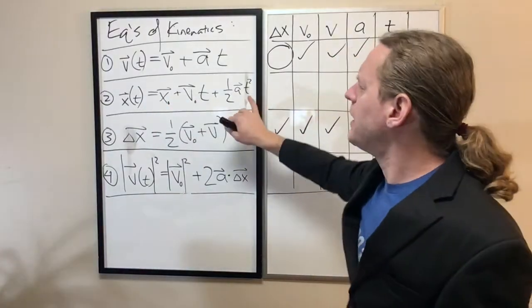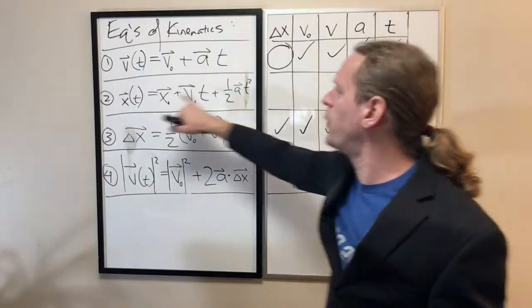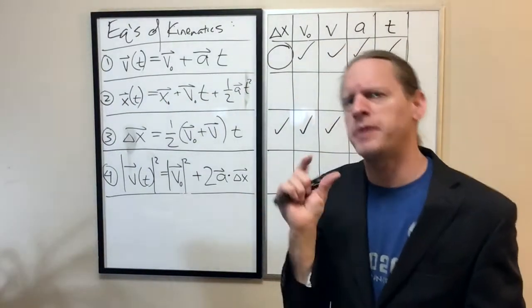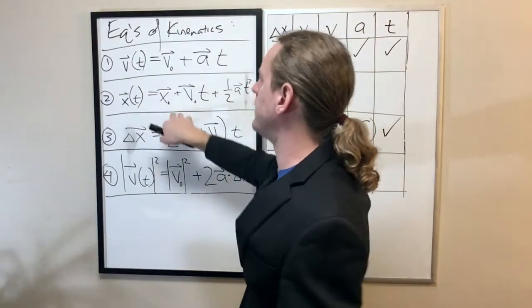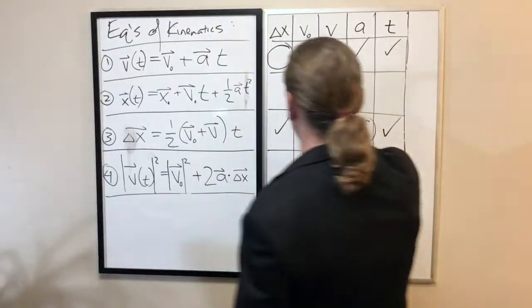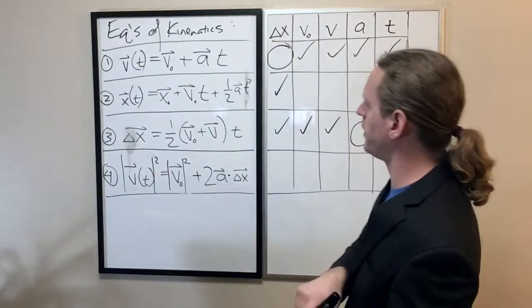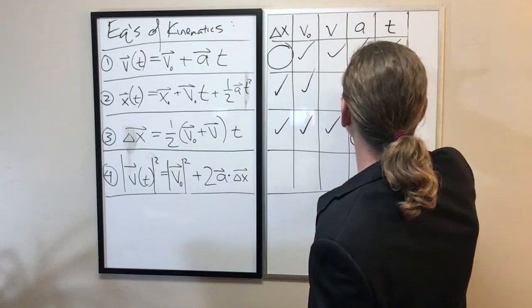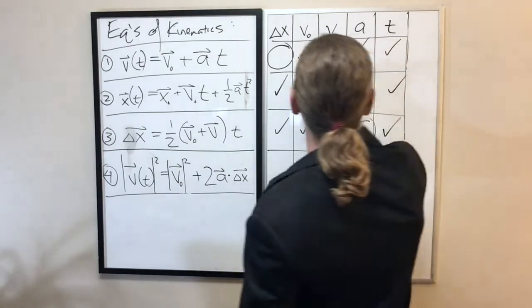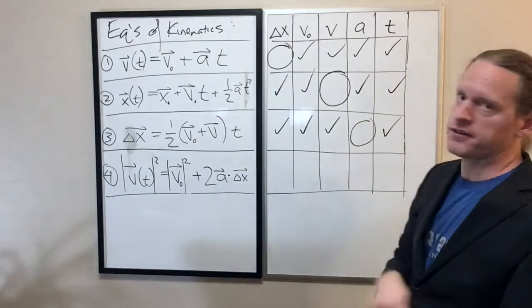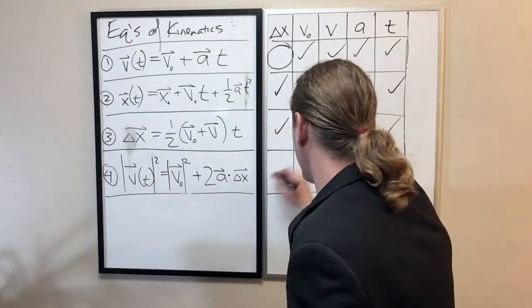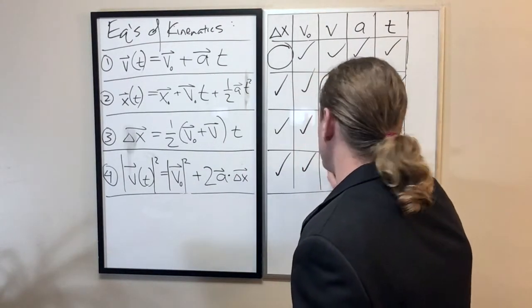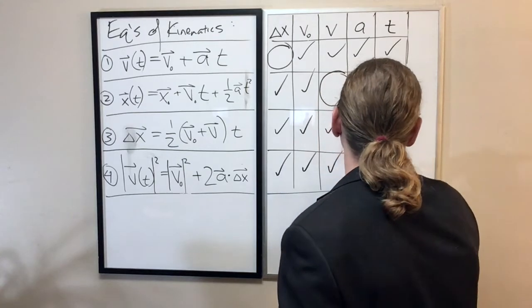Equation one doesn't tell us anything about displacement. Now, if you look here, is there a displacement in equation two? Yes, there is, but it's hidden. You have to swap around a little bit. When you subtract x naught from both sides, the left-hand side just becomes a displacement. So, we do, in fact, have a displacement. We have an initial velocity, we have an acceleration and a time. We have no mention of final velocity in equation two. And do equation four by yourself.